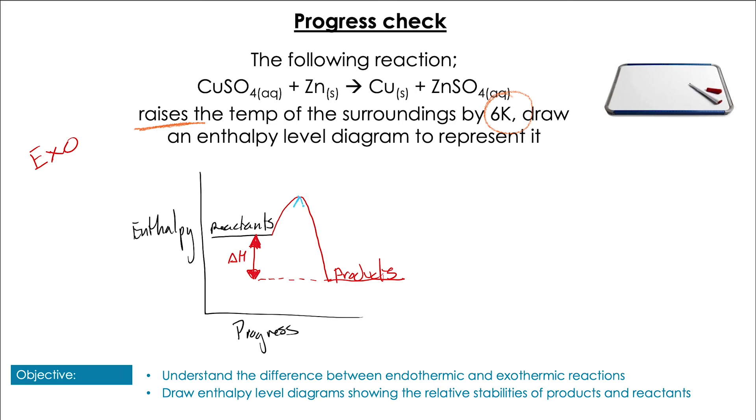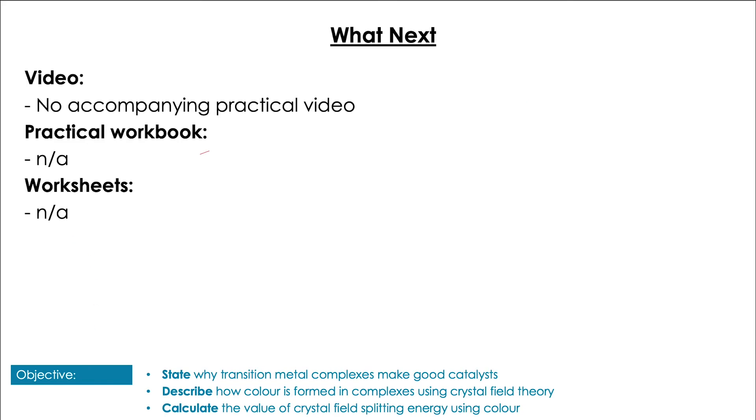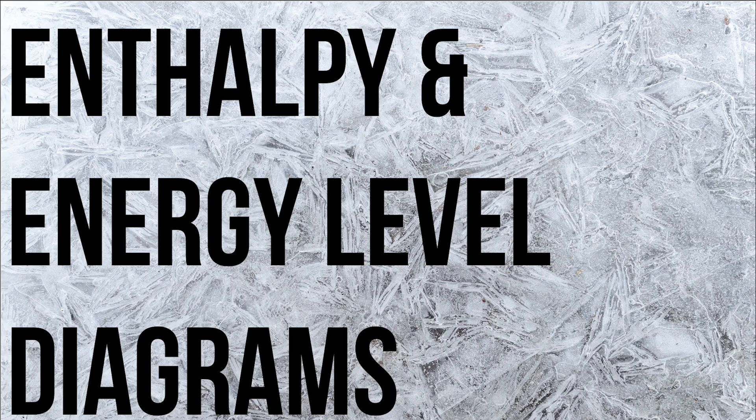And then just drawing in the representation for the negative value of delta H and also labeling our activation energy as usual too. Don't have to worry about questions on this just yet - I'm going to save them until after we've done the next lesson. So hopefully you got some good notes. Thanks again for joining me guys, don't forget to like, subscribe, hit the bell icon, and as always, practice makes slightly better.